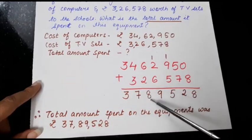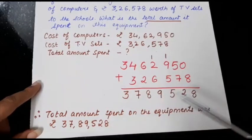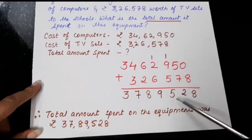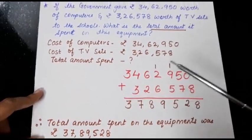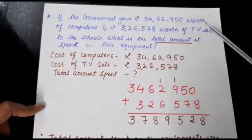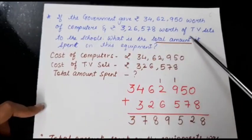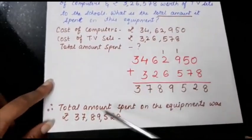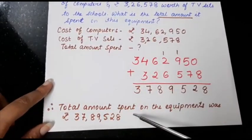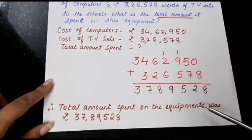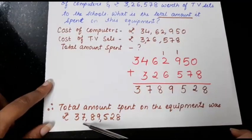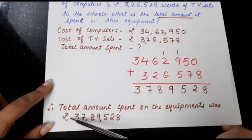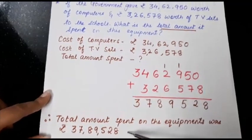So that means how much amount was spent? Total amount. What is asked in the question? What is the total amount? So we can write the total amount spent on the equipments was 37,89,528 rupees. So this much amount was spent.